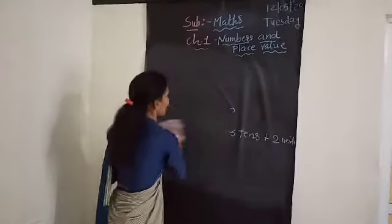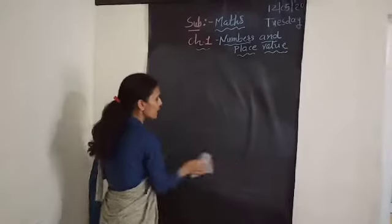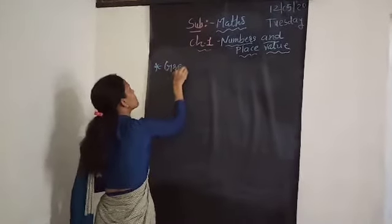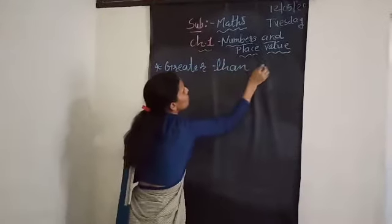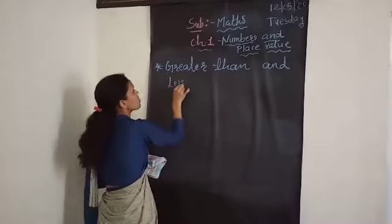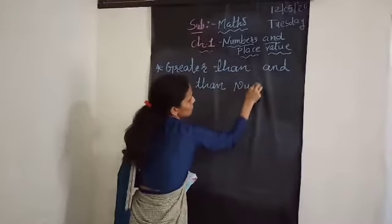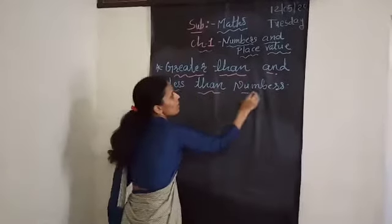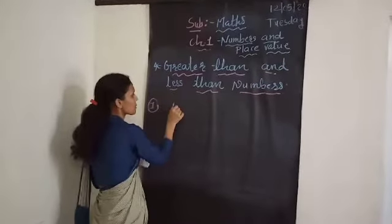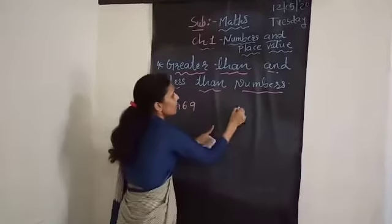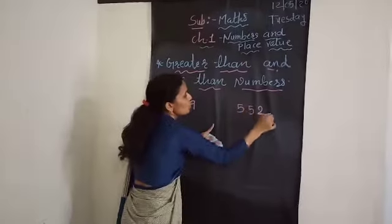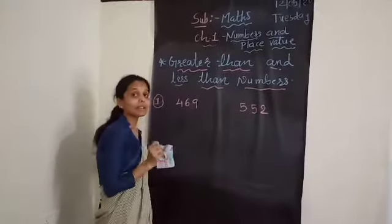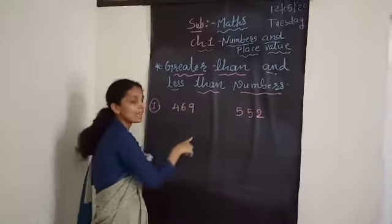The next topic is how to write greater than or less than numbers. For that we have to compare the given numbers. Here I will give you one example of how to write greater than or less than. First example: 469 and 552. I want to write which number is greater and which is smaller, so we have to compare the numbers one by one.